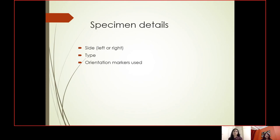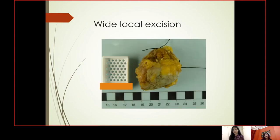For specimen details, it is important to know the side of the specimen — whether left or right — and tally it from the details on the request card and from orientation markers on the specimen. In cases of discrepancy, contact the surgical team before proceeding with cut-up. Then document the type of specimen and orientation markers used. This is a wide local excision with a short superior suture and a long lateral suture, which is usually done in our department.